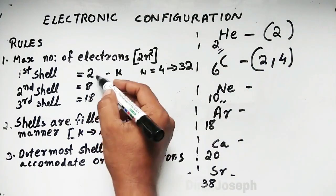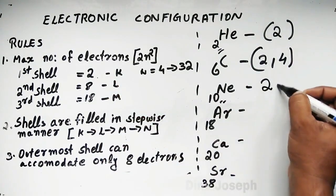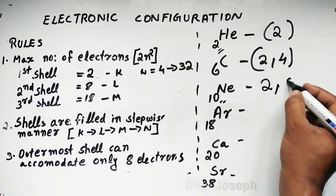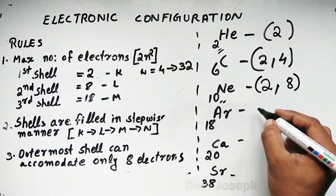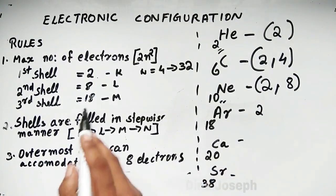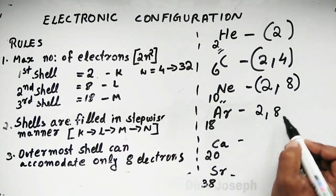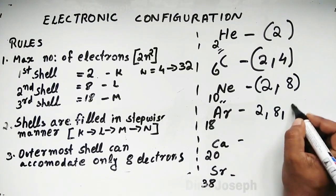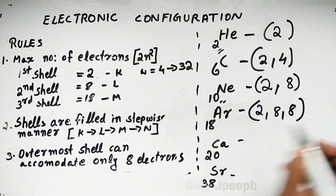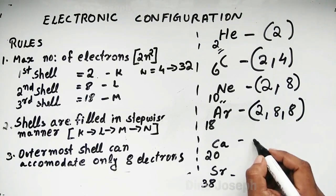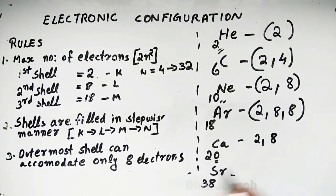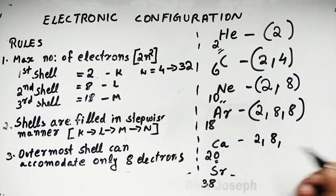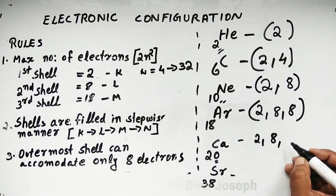Neon's electronic configuration is 2, 8. For chlorine with 17 electrons: K is 2, L is 8, M is 7 — giving configuration 2, 8, 7. For calcium with atomic number 20: K is 2, L is 8, M shell can hold up to 18, so configuration is 2, 8, 8, 2.